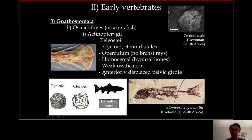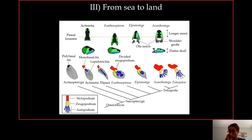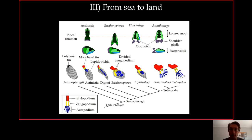One last important character of teleosteans is the anteriorly displaced pelvic girdle — the pelvic fins are positioned more forward than in primitive fish. That was the last slide for today's lecture. Next time we will talk about the sarcopterygians, spending more time on them than the other fish groups, because they are the ones that eventually evolved into tetrapods — the land-dwelling animals. The next chapter is called 'From Sea to Land.'